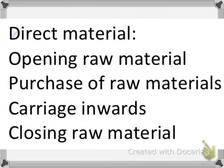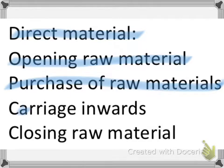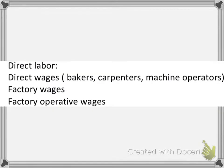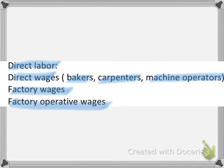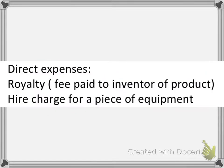Under direct material comes opening raw material, purchase of raw materials, carriage inwards, and closing raw material. Under direct labor, there are direct wages, factory wages, and factory operator wages — examples being bakers, carpenters, or machine operators. Under direct expenses, the first item is royalty, which is basically the fee paid to the inventor of the product, and the second is the hire charge for a piece of equipment.